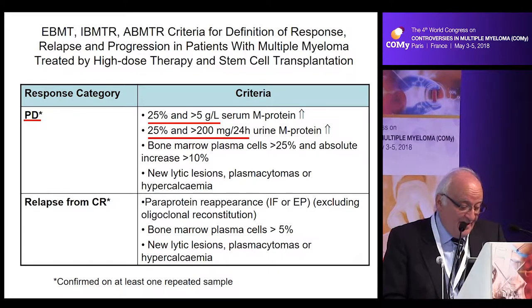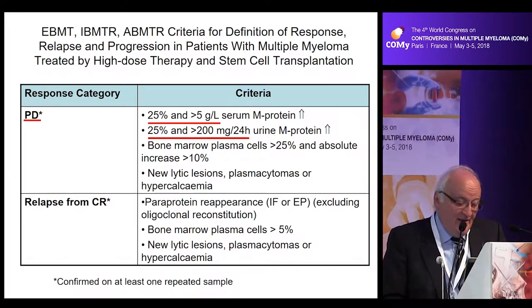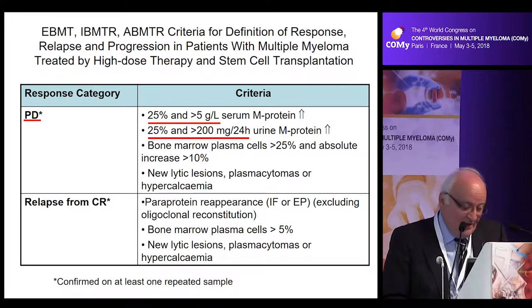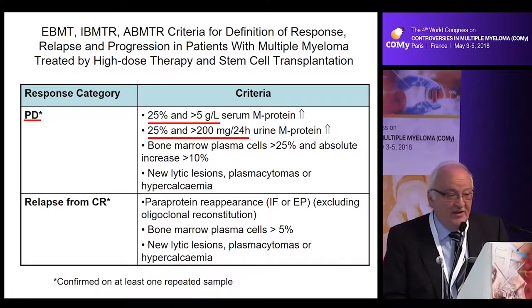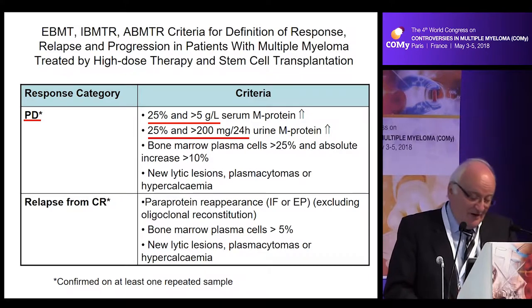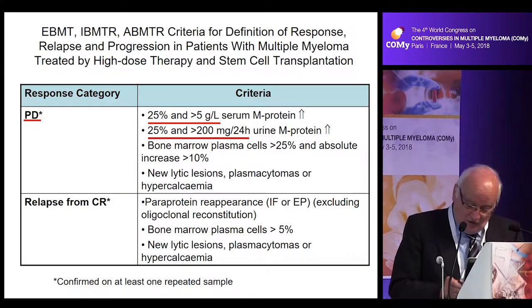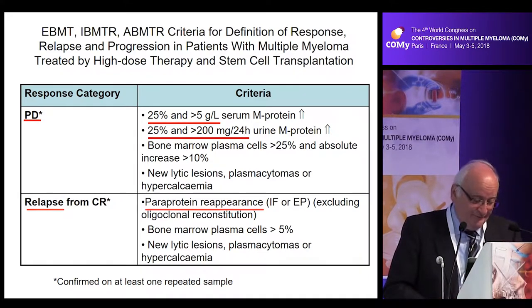Relapse from CR requires the reappearance of the involved immunoglobulin — excluding oligoclonal reconstitution — bone marrow plasma cells more than 5%, or new lytic lesions, plasmacytomas, or hypercalcemia.